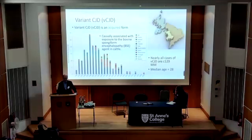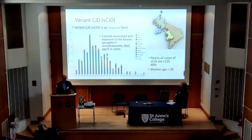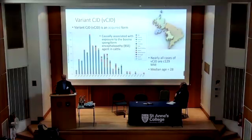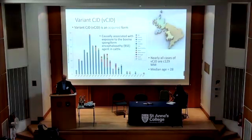This was particularly the case for variant CJD. Variant CJD is an acquired form of the disease causally associated with bovine spongiform encephalopathy — the epidemic that occurred in cattle in the late 1980s and early 1990s. This graph shows the variant CJD epidemic, which was principally a problem of the United Kingdom — the blue bars show UK cases — though some other countries were affected, notably France. Nearly all cases of variant CJD were MM at codon 129, and another stark feature was that it affected much younger people, with a median age of death of 28.